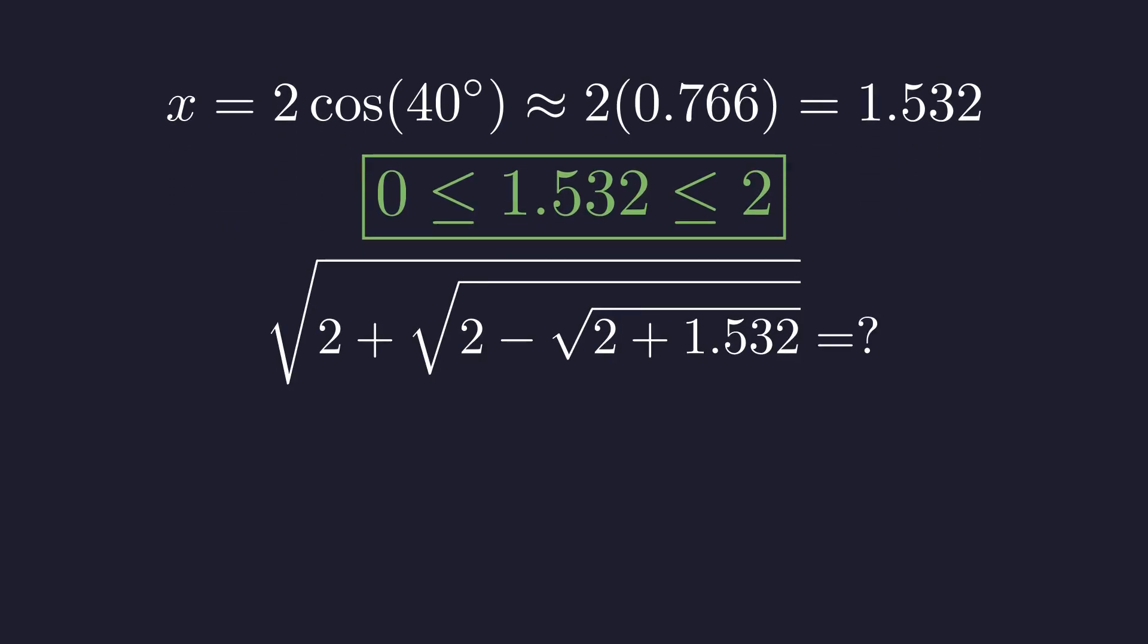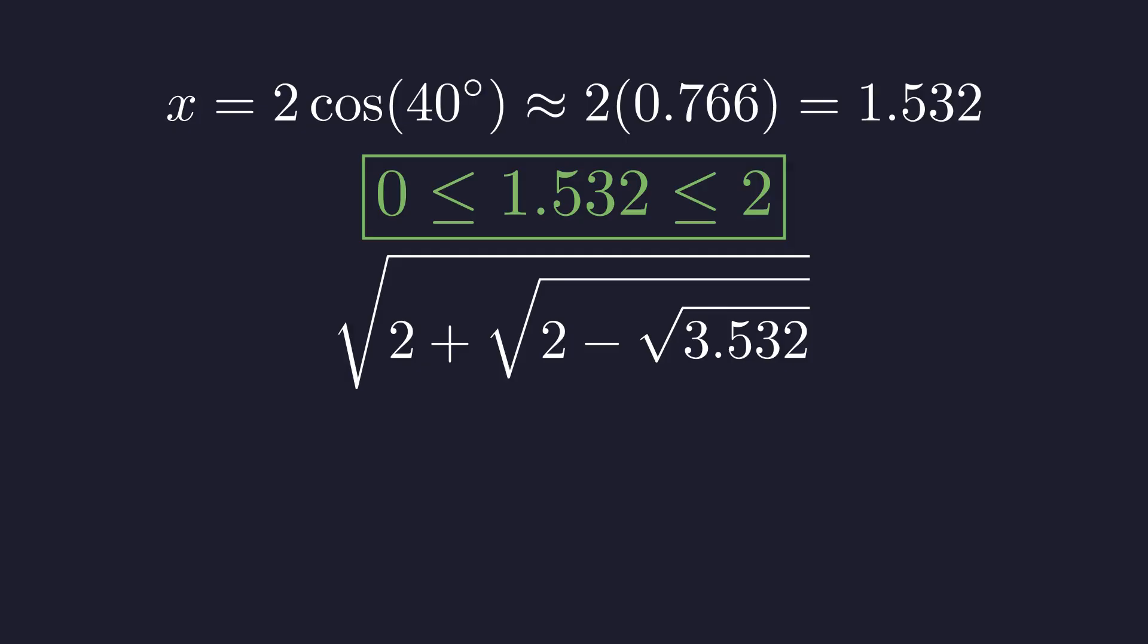But we must also verify that this value actually satisfies the original equation. Let's substitute x equals 1.532 into the right-hand side, working from the inside out. 2 plus 1.532 equals 3.532. The square root of 3.532 is approximately 1.88.